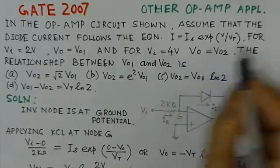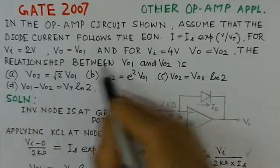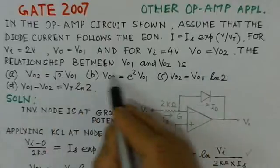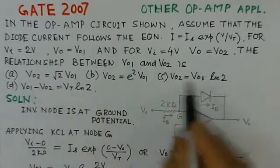For Vi is 2 volts, V0 is V01, and for Vi is equal to 4 volts, V0 the output is V02. The relationship between V01 and V02 is given. There are four options here and we have to see which is the right one.